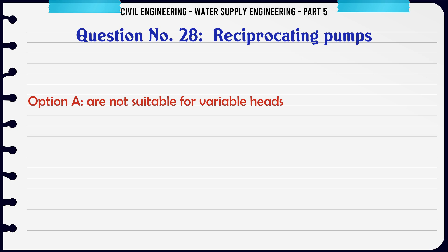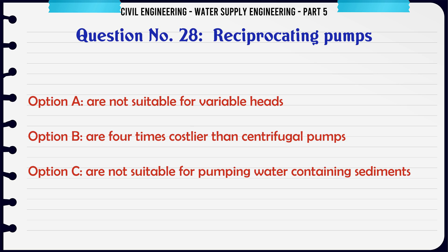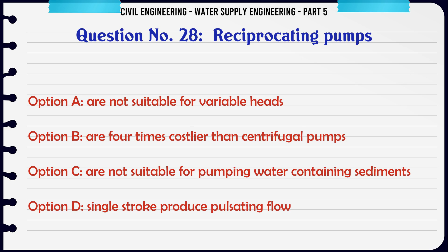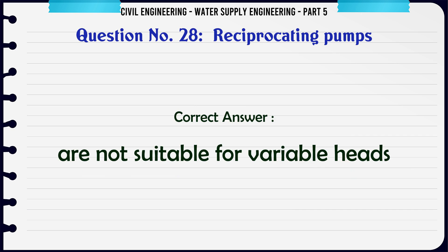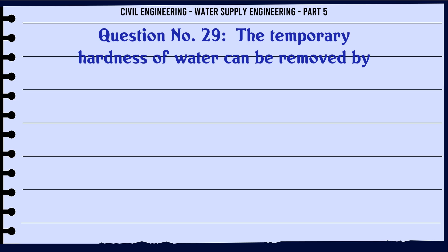Reciprocating pumps: A. Are not suitable for variable heads; B. Are four times costlier than centrifugal pumps; C. Are not suitable for pumping water containing sediments; D. In single stroke produce pulsating flow. The correct answer is: Not suitable for variable heads.